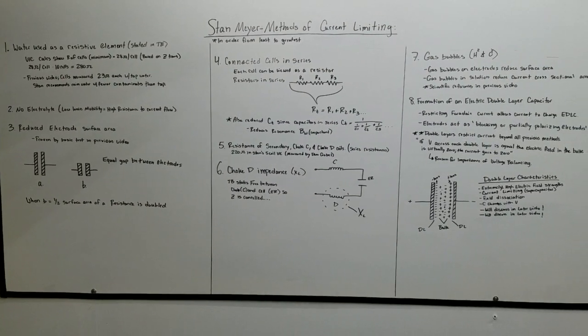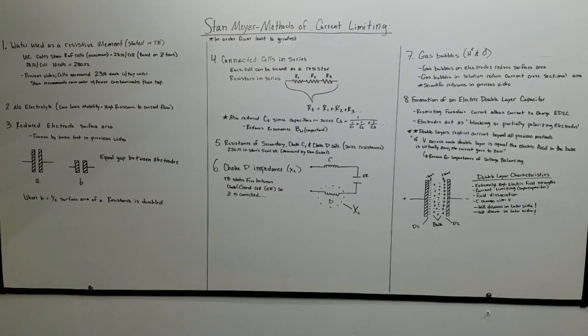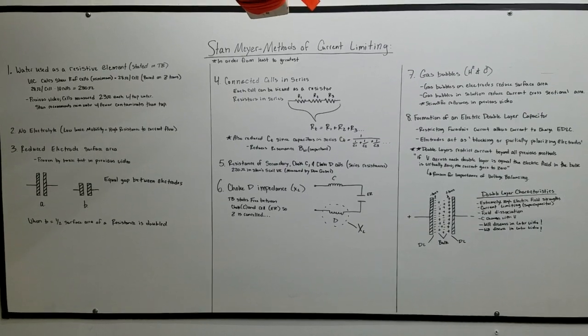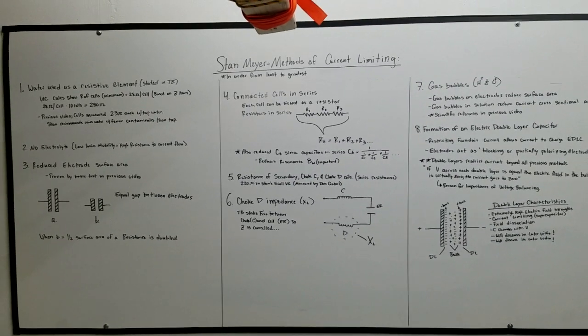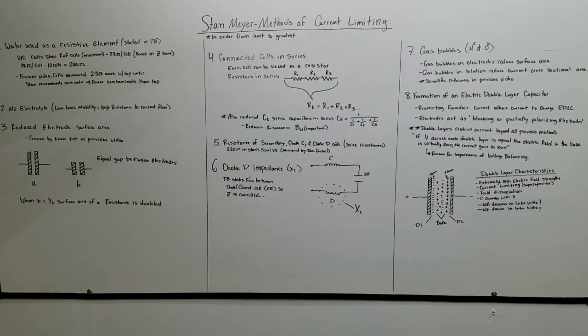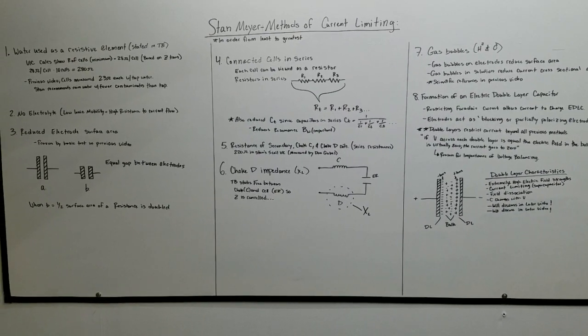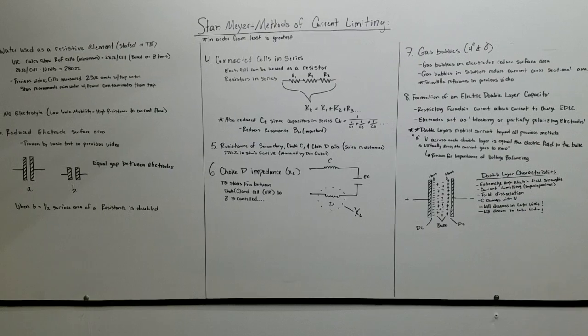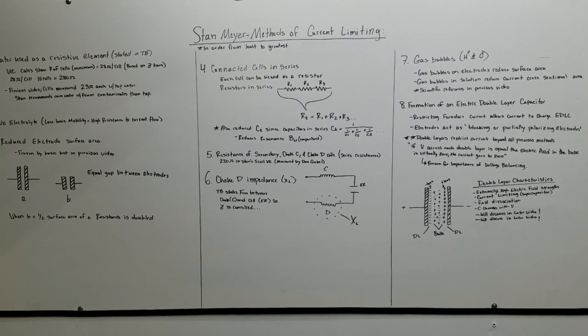Hey everyone. So today we're going to talk about Stan Meyer's methods of current limiting. One thing Stan did, if you start researching his work, you realize whenever he had a problem, he didn't just go at it from one angle. He found as many ways as he could to solve that problem and used every one of them.